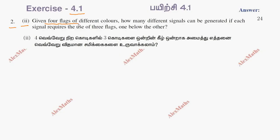Given 4 flags of different colors. We have 4 flags with different colors — 4 colors. How many different signals can be generated?